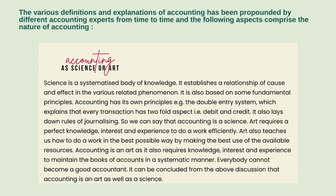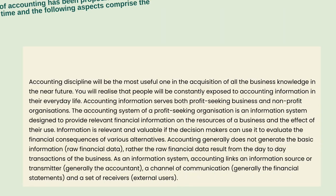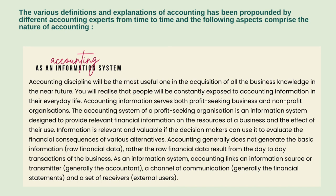Not everybody can become a good accountant. It can be concluded that accounting is both an art and a science. Accounting as an information system will be most useful in acquiring business knowledge. People are constantly exposed to accounting information in their everyday life. Accounting information serves both profit-seeking businesses and non-profit organizations, providing relevant financial information on resources and the effect of their use. Information is relevant and valuable if decision-makers can use it to evaluate the financial consequences of various alternatives.